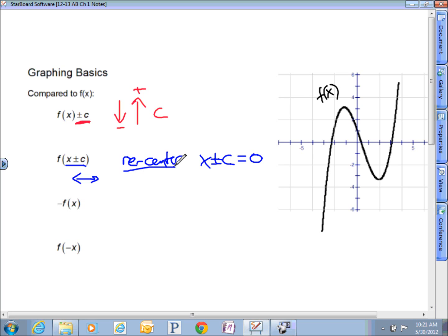What happens with this cute little negative sign out in front of the function? That's going to flip it. How does it flip it? It's going to flip it vertically.